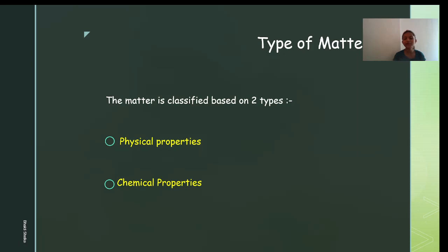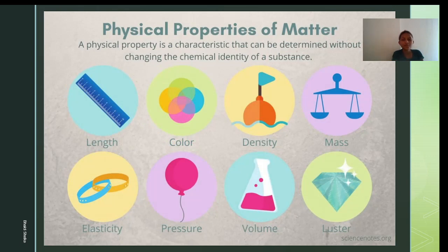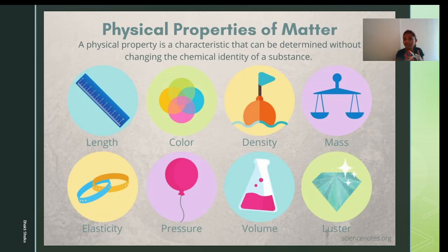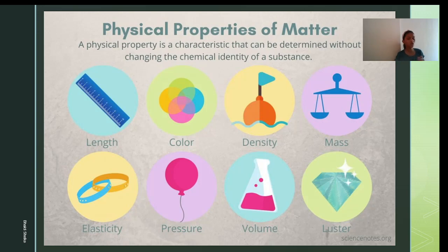Matter is classified based on two types: physical properties and chemical properties. Physical properties are characteristics that can be determined without changing the chemical identity of a substance. For example, if I throw or crumble this cube, its color, density, mass, elasticity, pressure, and volume won't change — those physical properties are not going to change.